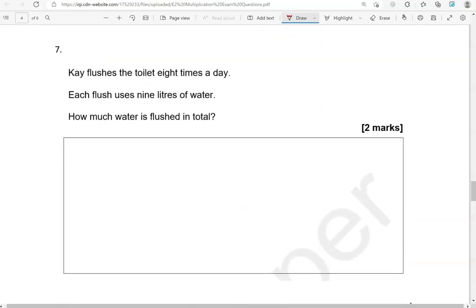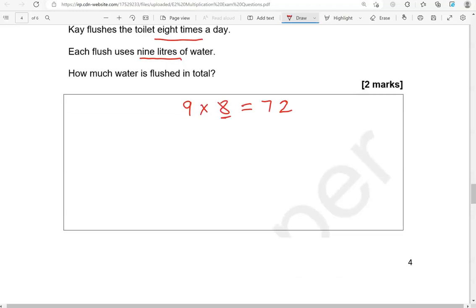Okay, flushes a toilet 8 times a day. Each flush uses 9 litres of water. How much water is flushed in total? So we're working out 9 times 8. So I'll again use the trick. What are we multiplying 9 by? That's 8. So the answer will start with 1 less than 8. 1 less than 8 is 7. Okay, what is that number we add to 7 to give us 9? That is 2. So 72 is the answer.